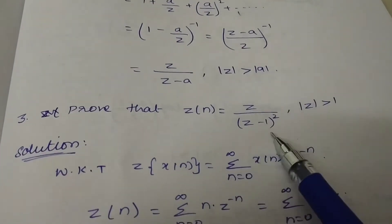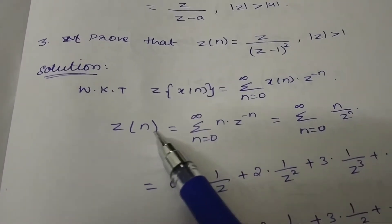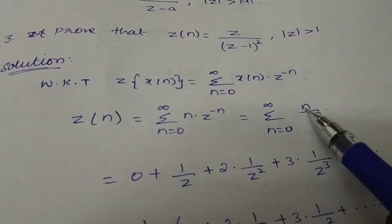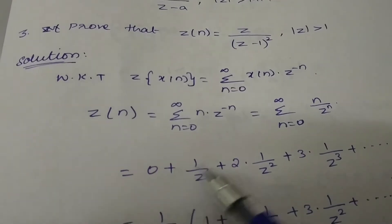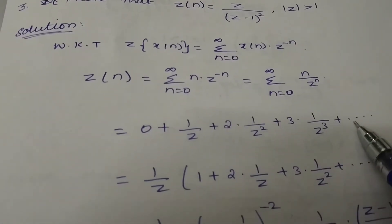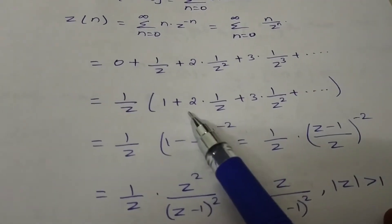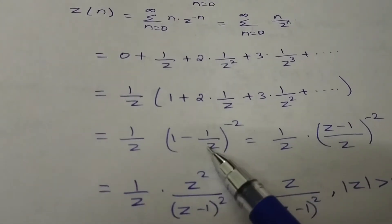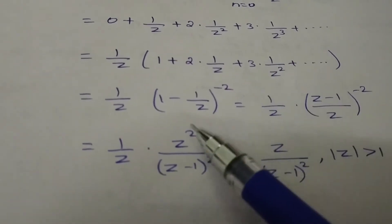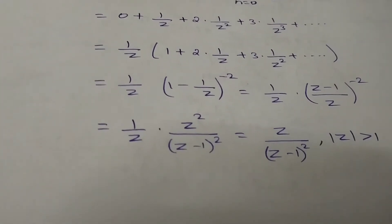Next: prove Z{n} = z/(z-1)². Apply the Z-transform formula and replace x(n) with n, giving n times Z^(-n). Bring n to the denominator notation. When n=0, the numerator is 0 so first term is 0. When n=1, we get 1/z. When n=2, we get 2/z² plus etc. Factor out 1/z; the series becomes 1 + 2x + 3x² format. So use formula (1-x)^(-2) with x = 1/z. Simplify, raise to power -2 meaning take reciprocal and square. Result: z/(z-1)². Proved.